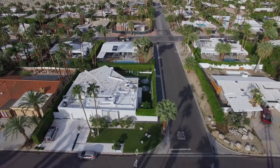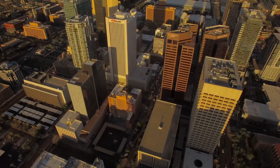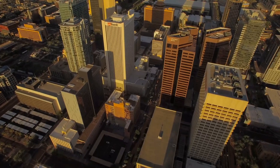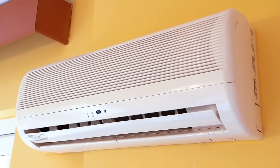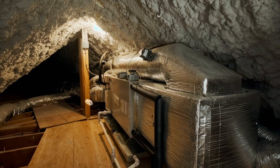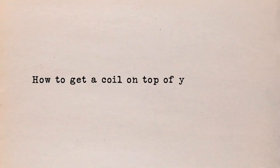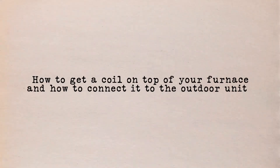If you are in a state like California or Arizona, this might not sound familiar because certain regions don't have basements. In that instance, your furnace or air conditioner is probably in an attic or a closet somewhere. The bottom line is that we have to figure out how to get a coil on top of your furnace and how to connect it to the outdoor unit.